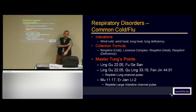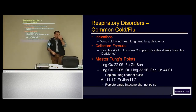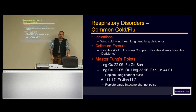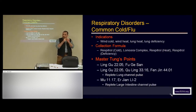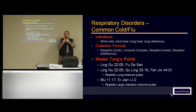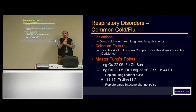Needling this will clear that pulse presentation. If the superficial aspect of the sun position is replete, that's large intestine channel excess — in which case we needle large intestine two, Arjian. Large intestine two is the water point on the large intestine channel; that's the drainage point. We also have points in Dong's acupuncture in the same area of the finger that treat cough and respiratory disorders. Then Mu, because Mu is also on the large intestine channel — so we do large intestine two on one side, Mu on the other side, and that combination will clear the replete large intestine pulse.